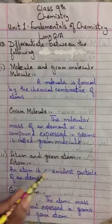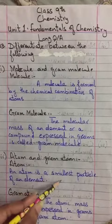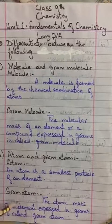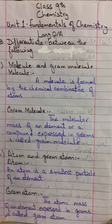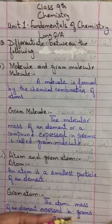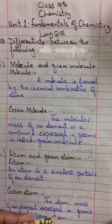Atom and Gram Atom. Atom: an atom is the smallest particle of an element. Gram Atom: the atomic mass of an element expressed in grams is called Gram Atom.